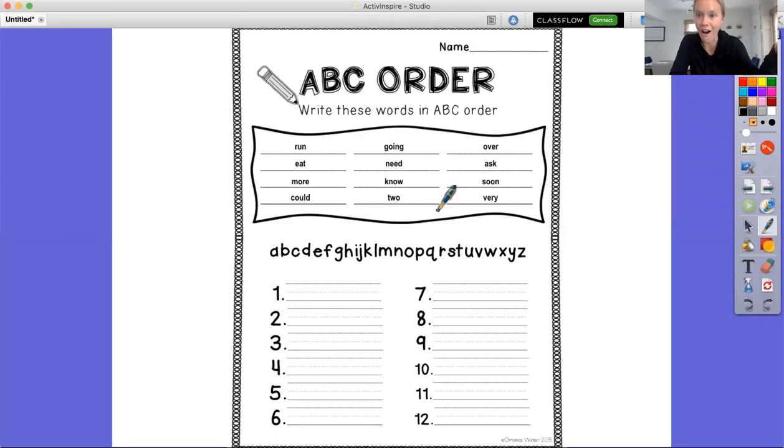So today what you are going to do is you are going to be working on ABC order or alphabetical order, which means that you are going to take these snap words and you are going to put them in order of the alphabet. And the way that we do that is by looking at the first letter of each word.